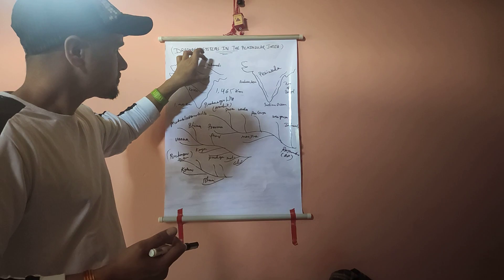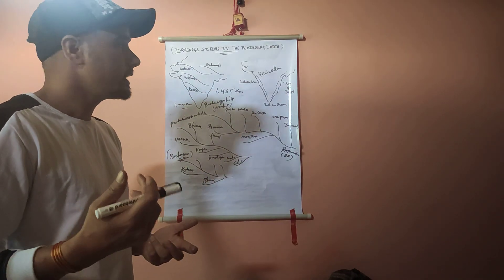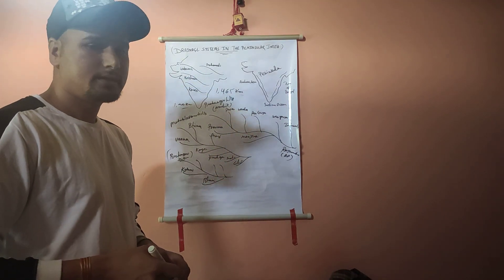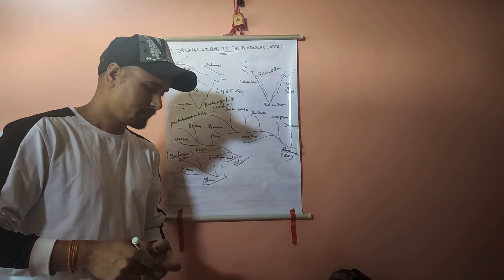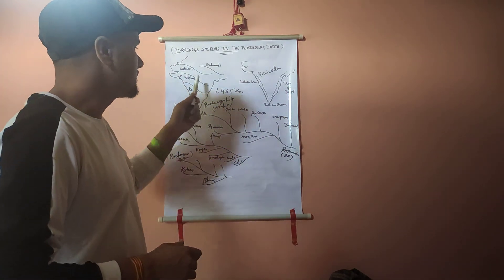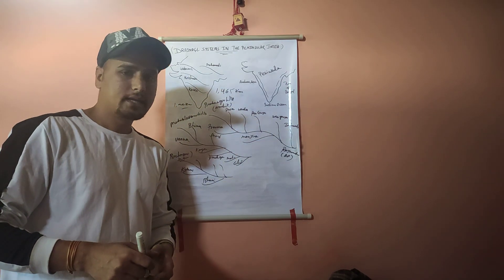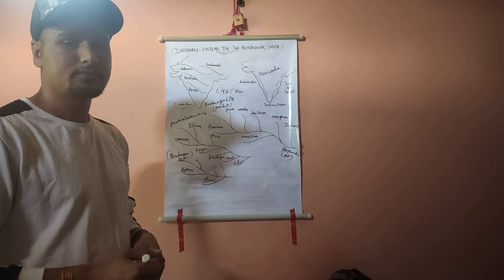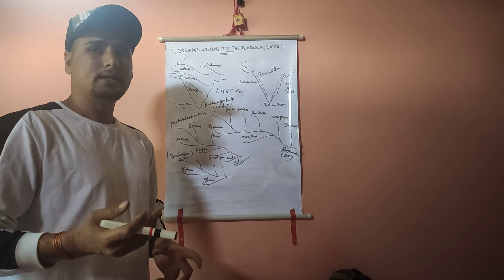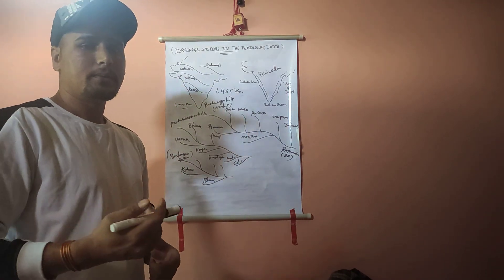The last major east flowing river is the Mahanadi, whose name means 'big river.' Its length is about 860 km. The Mahanadi rises in the highlands of Chhattisgarh, then flows into Odisha, and drains into the Bay of Bengal. So the major peninsular rivers of India are Mahanadi, Godavari, Krishna, and Kaveri. The next topic will be the west flowing rivers.